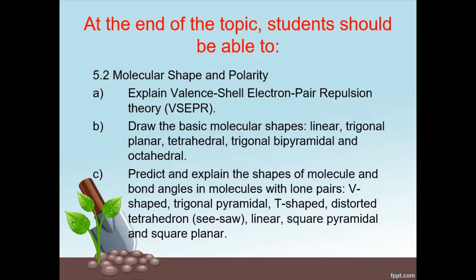We are going to explain Valence Electron Pair Repulsion Theory by drawing the basic molecular shapes which are linear, trigonal planar, tetrahedral, trigonal bipyramidal, and octahedral. Then we are going to predict and explain the shapes of molecules and bond angles in molecules with lone pairs, which are V-shaped, trigonal pyramidal, T-shaped, distorted tetrahedron, linear, square pyramidal, and square planar.